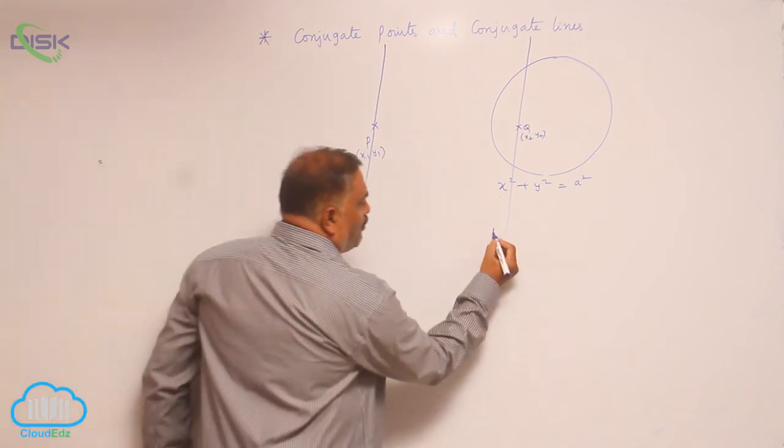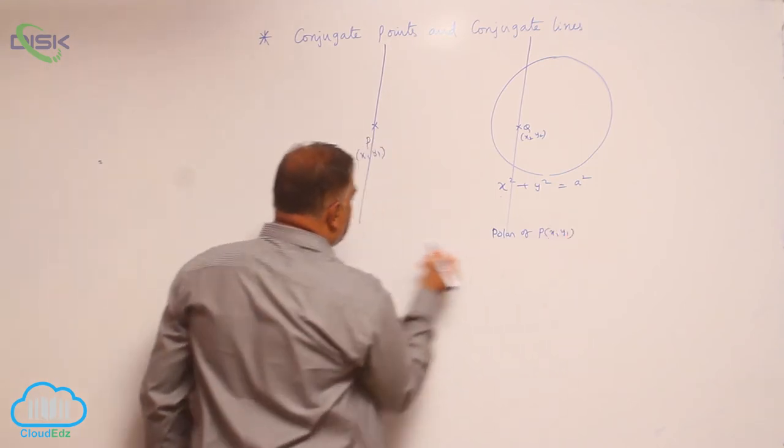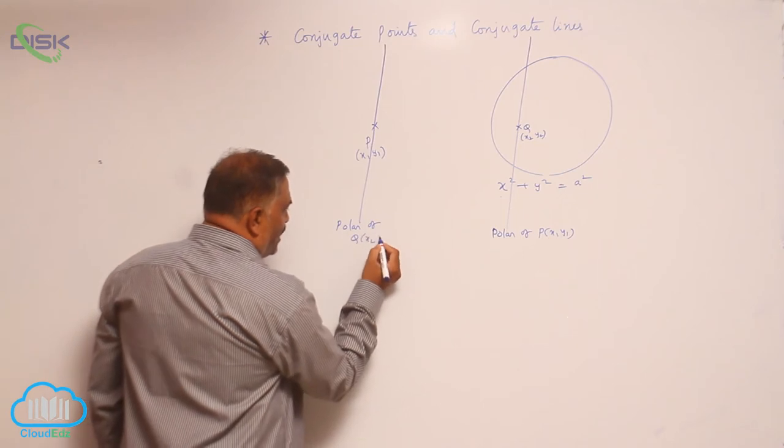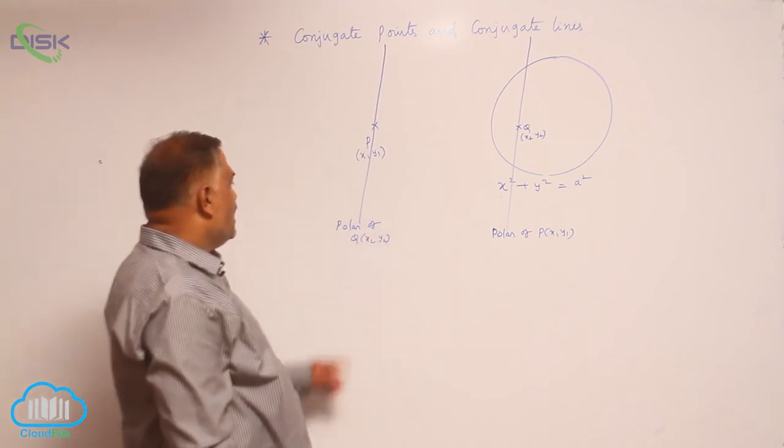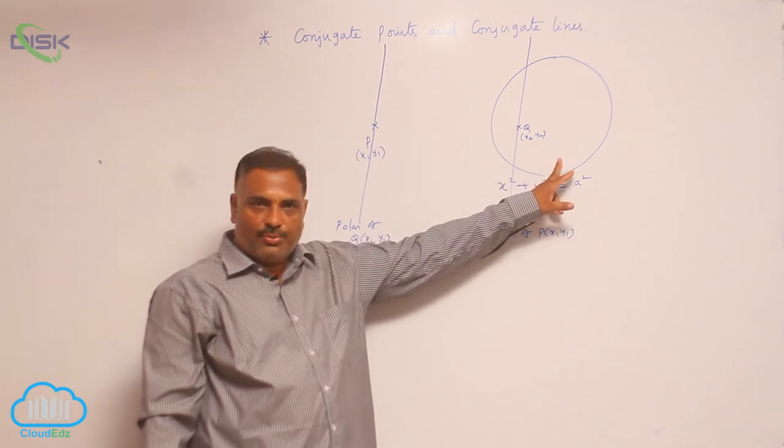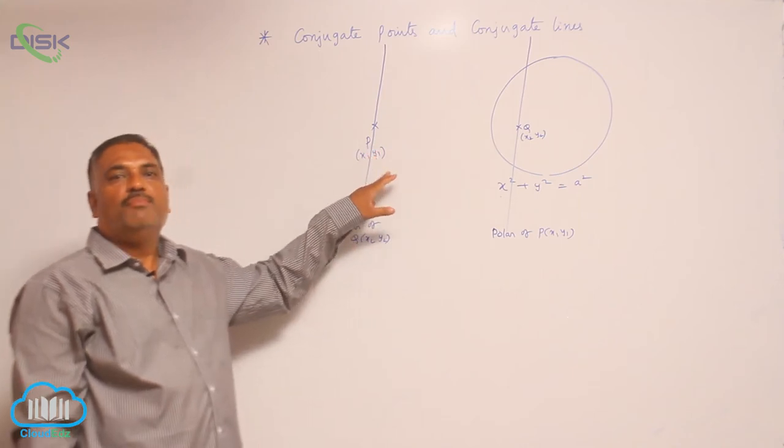This is called polar of p x1 y1 and this is polar of q x2 y2. Now, you see very clearly the polar of p x1 y1 passes through q x2 y2 and polar of q x2 y2 passes through p x1 y1.